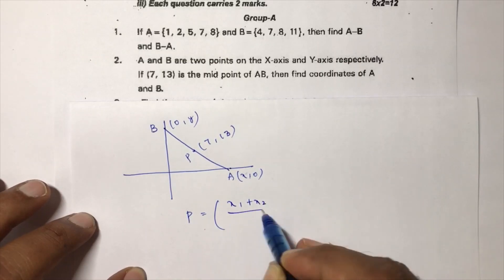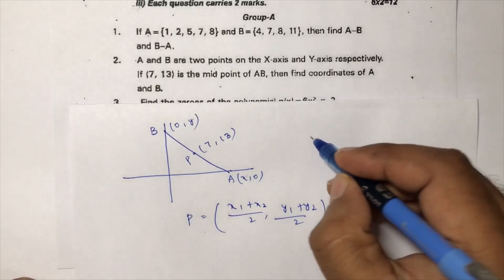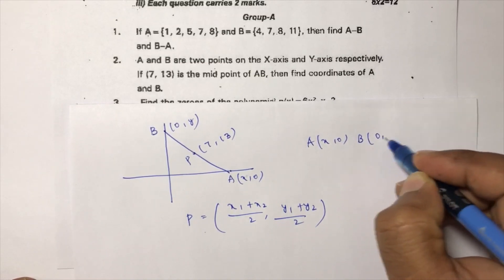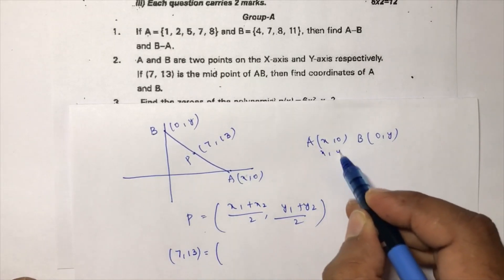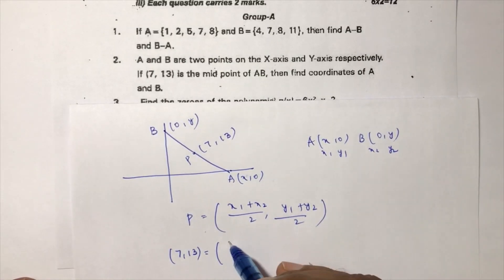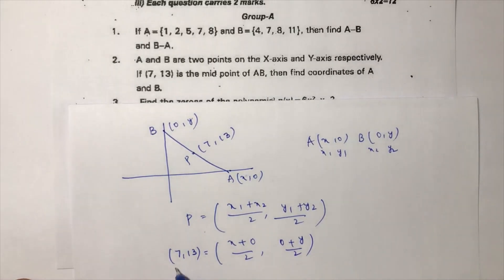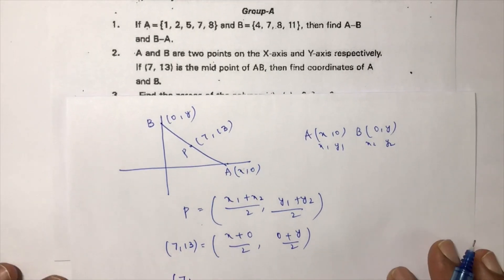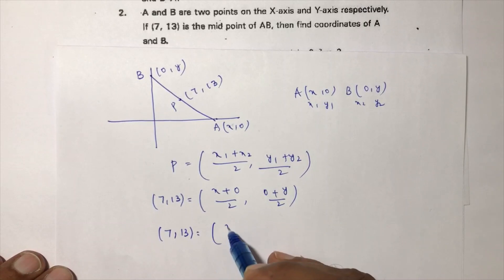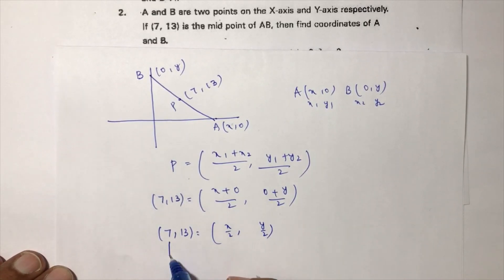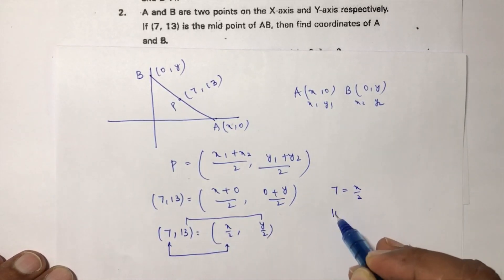The midpoint formula is ((x1 + x2)/2, (y1 + y2)/2). Here A = (x, 0) and B = (0, y), so midpoint = ((x + 0)/2, (0 + y)/2) = (x/2, y/2). Setting this equal to (7, 13): equate abscissa with abscissa and ordinate with ordinate, so 7 = x/2, giving 2 × 7 = 14 = x.